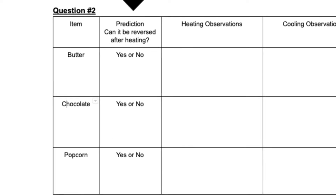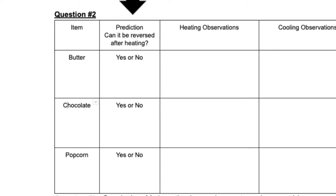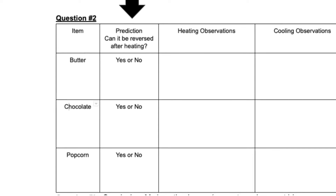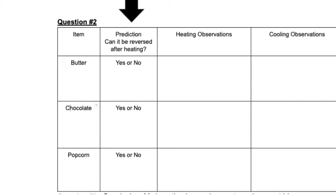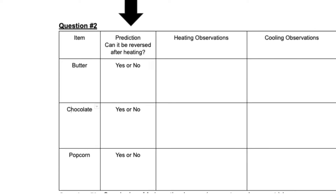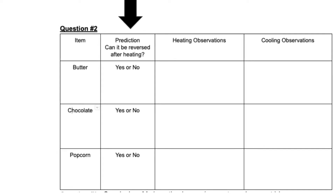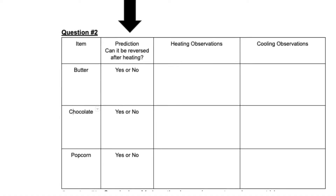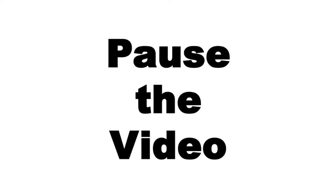The items we will be experimenting with are butter, chocolate, and popcorn. Look at your worksheet under question number two, and the first thing you need to do is make a prediction. See the column with the black arrow on my video? In each column, predict what you think is going to happen for each of the three items. Pause the video until you're ready, and then start it again.